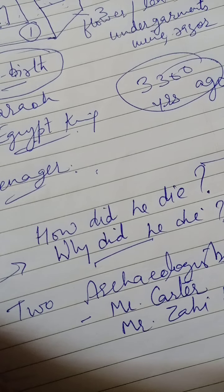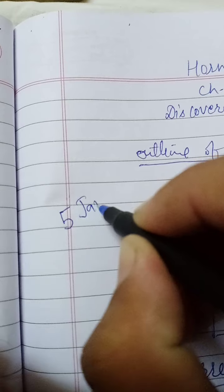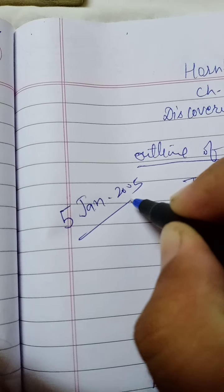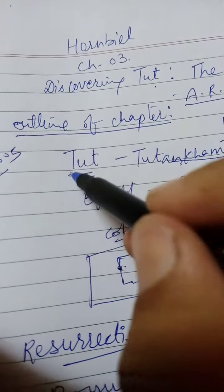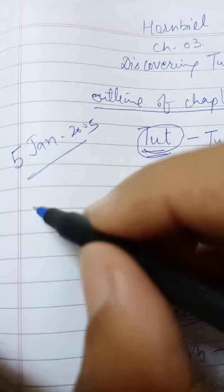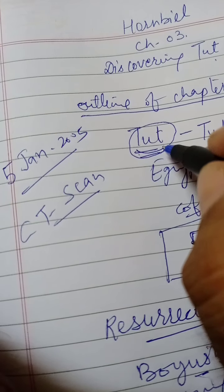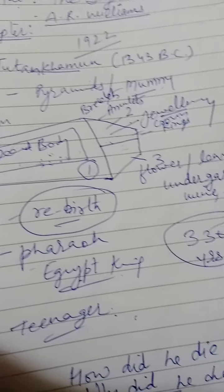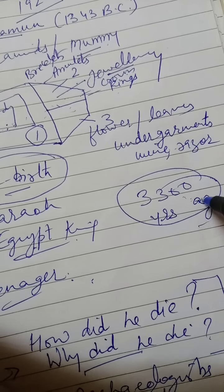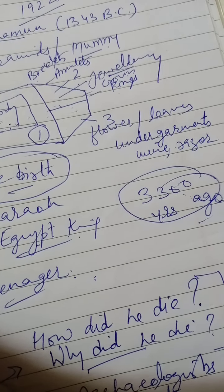On 5th January 2005, the world's most famous mummy — Tutankhamun's mummy — was taken out for a CT scan. This was the first king whose mummy was going to be scanned for the first time in the world, after 3300 years.